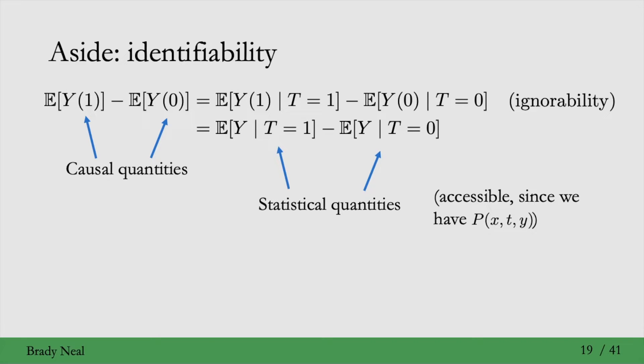It's important to get statistical quantities in the end, because these are what we actually have access to when we're just looking at samples from the joint distribution P of x, t, y.